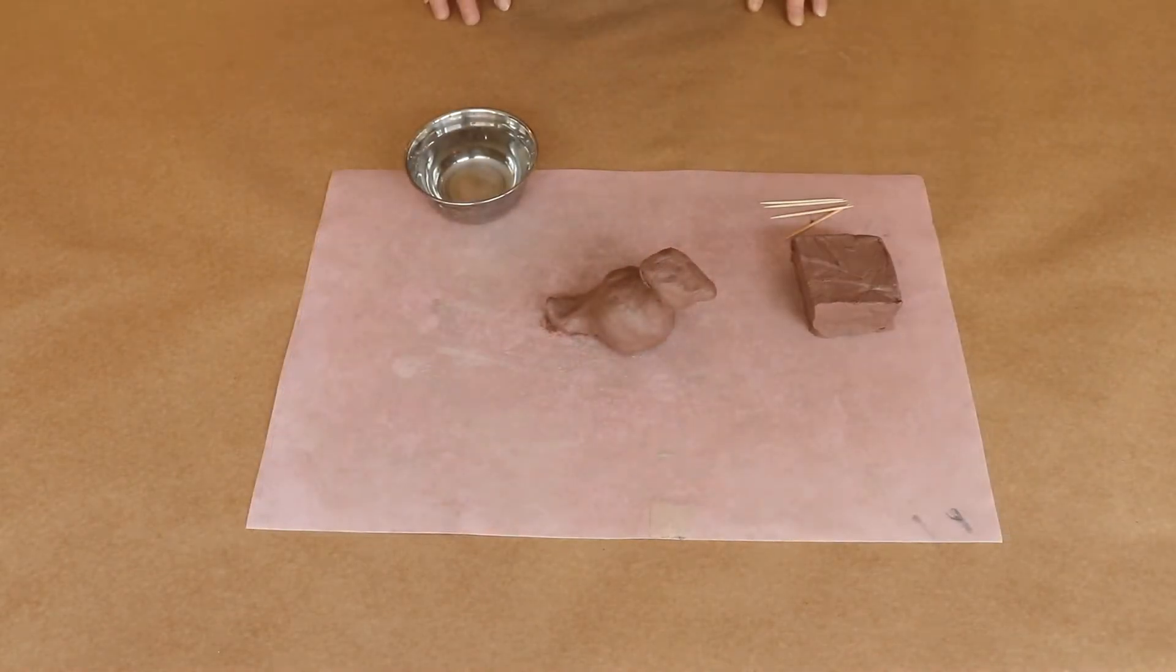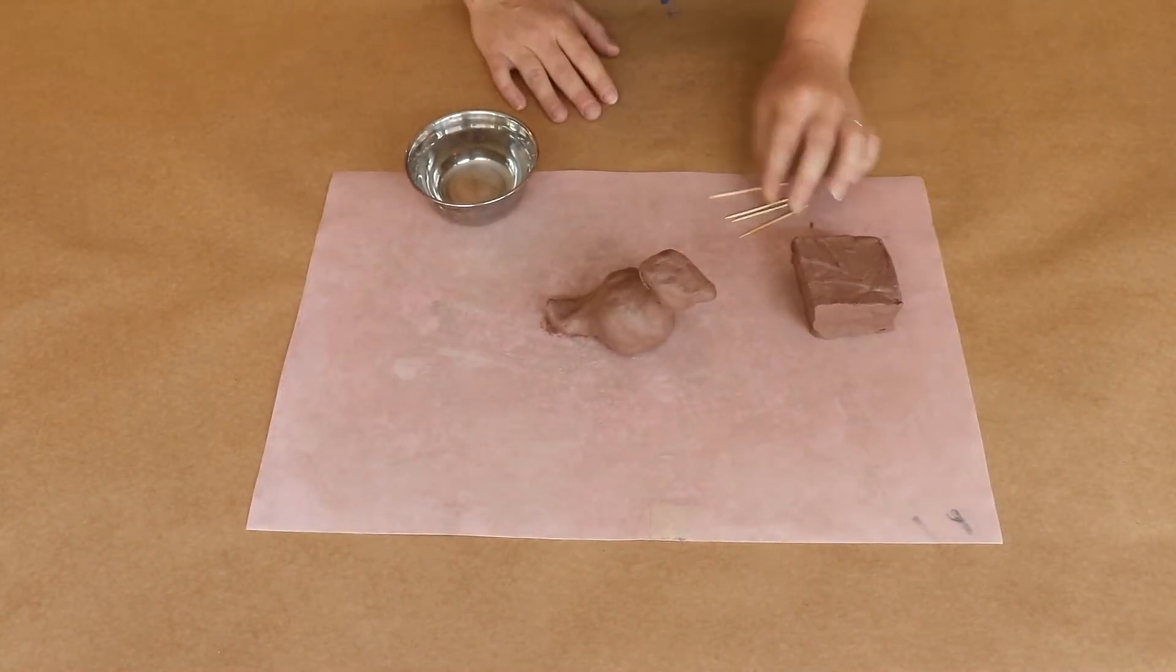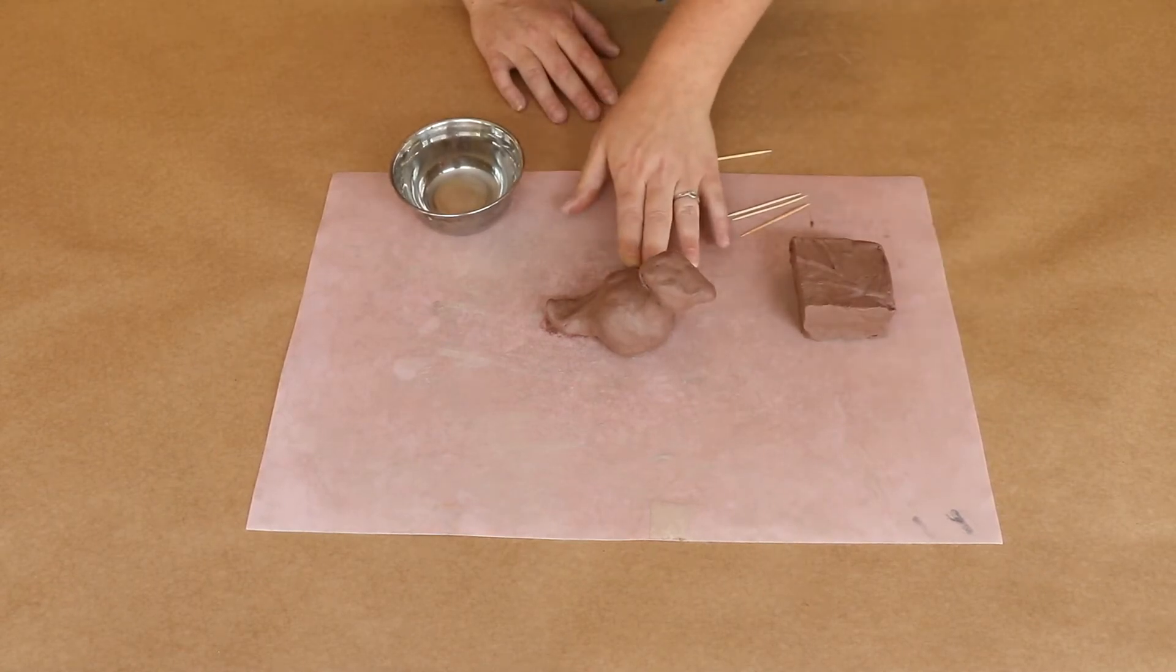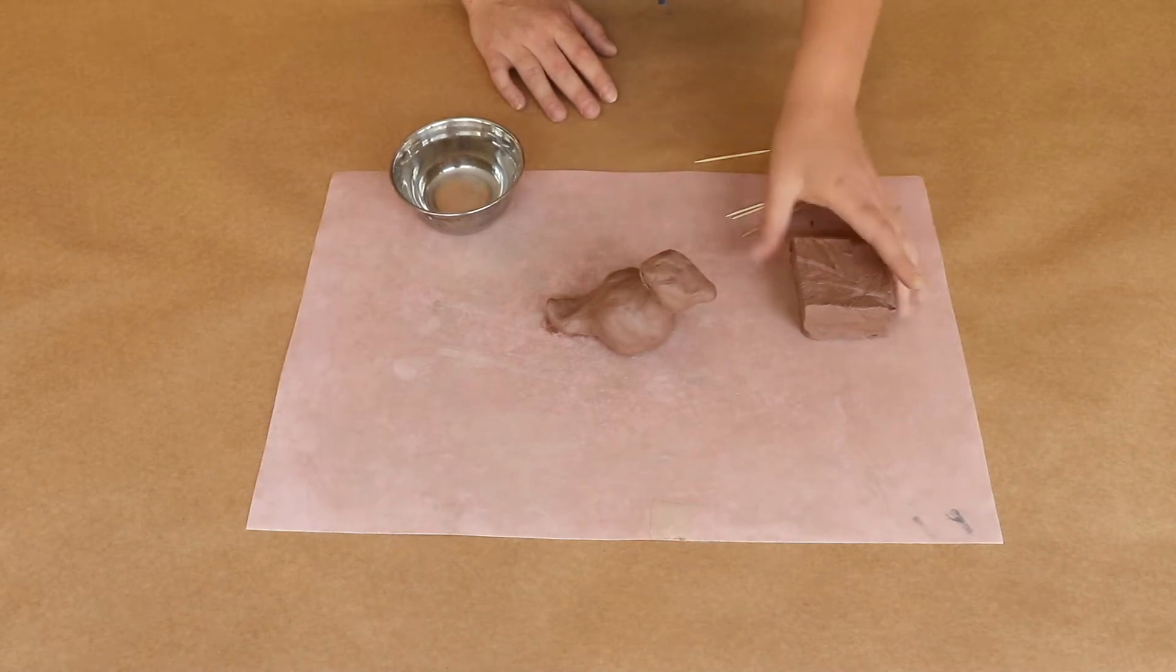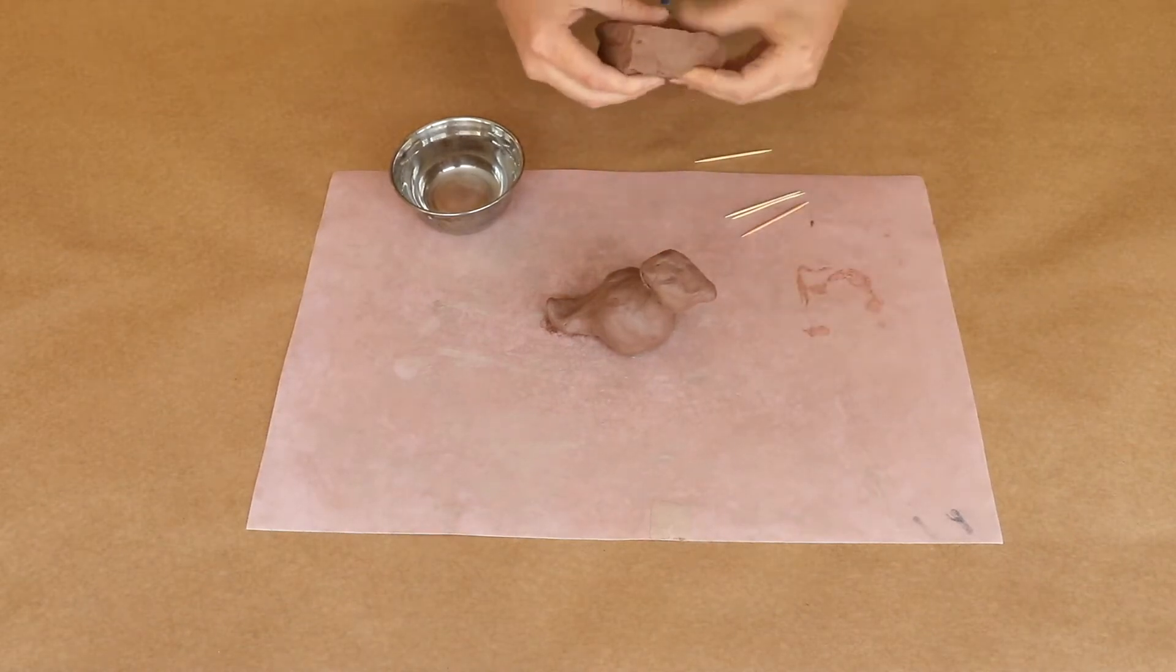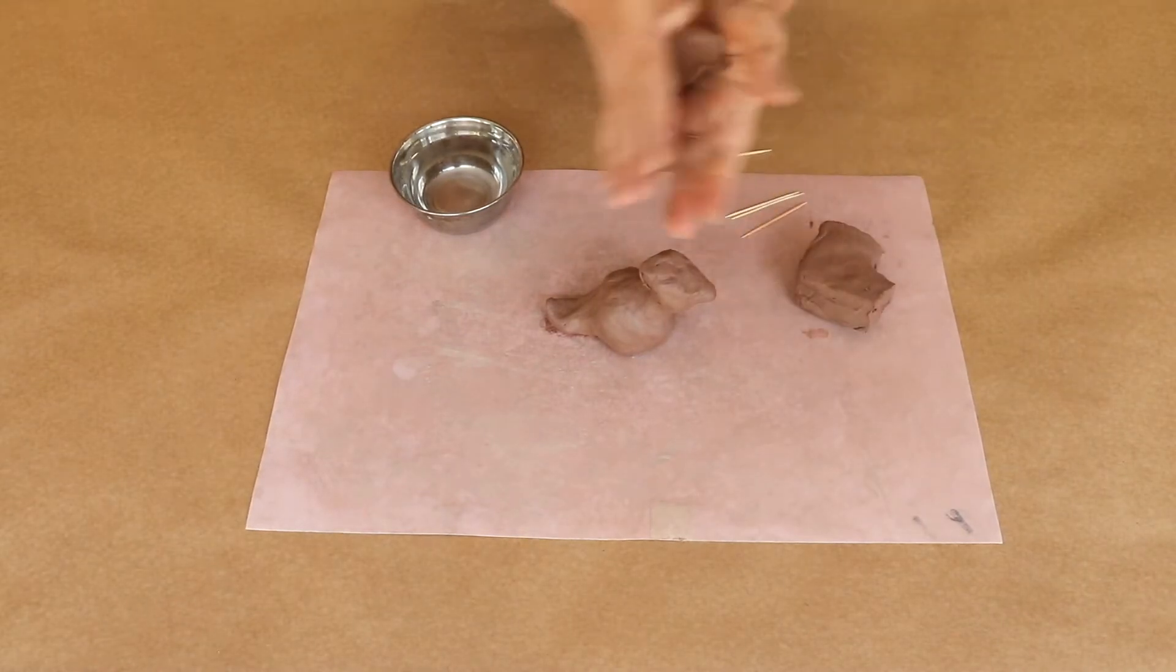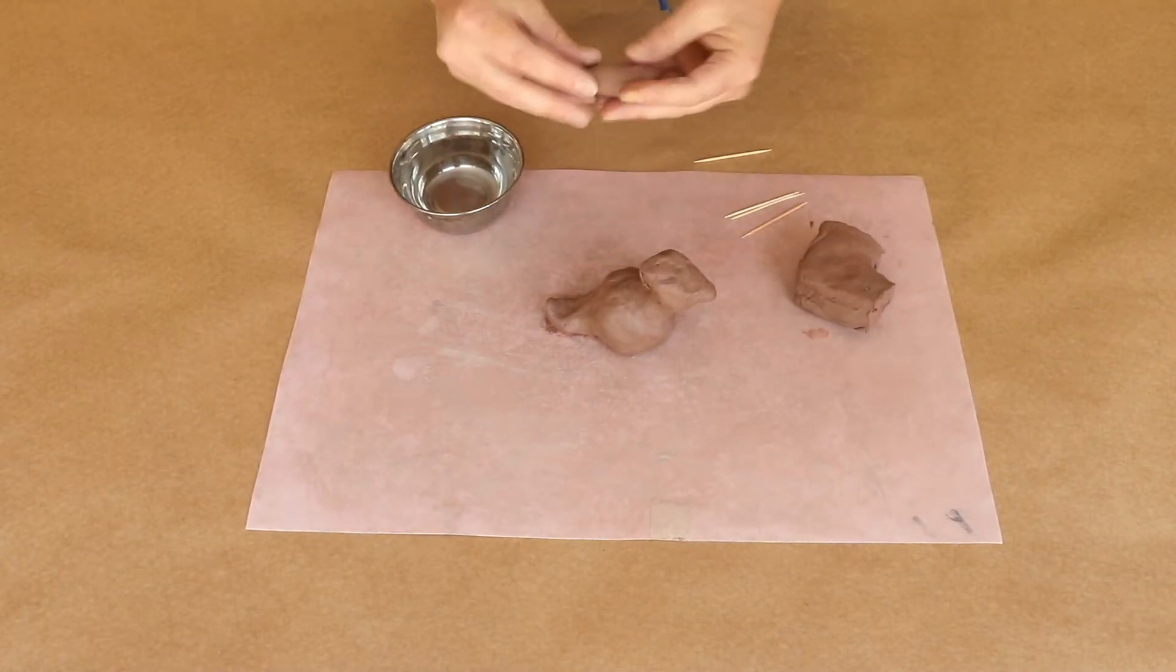Step three. Now you're going to grab your toothpicks, your water dish, and your other piece of clay. And we're going to start to attach other things to the body, such as flippers. If I wanted him to have some front flippers, I'm going to rip off a piece of clay and I'm going to start to form it, just like I did with the ball in the beginning. But I want to make a little point at this one end.